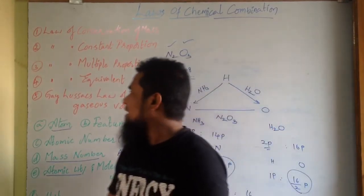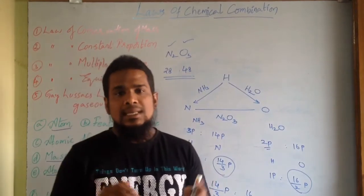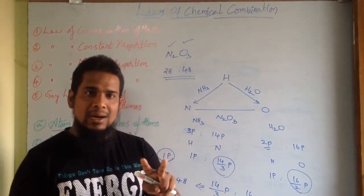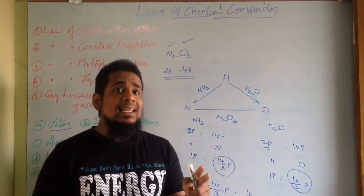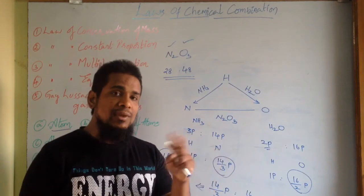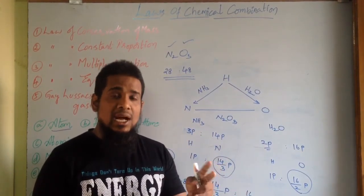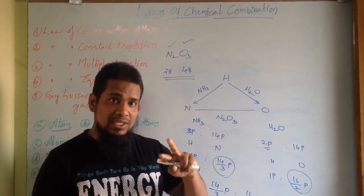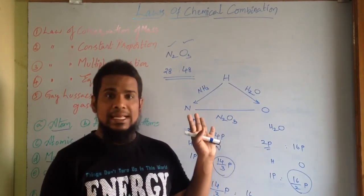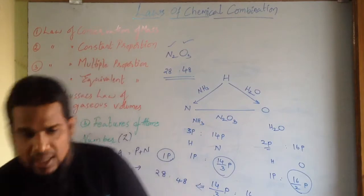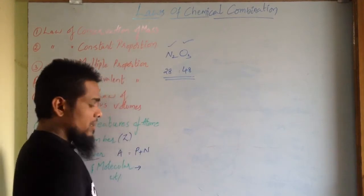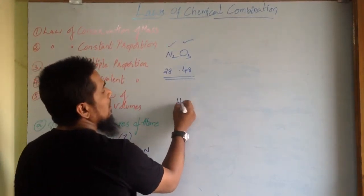Moving further towards Gay-Lussac's law of gaseous volumes: if two gases are combining to form a compound, the ratio of their volumes — both with each other and with the product — is always a simple whole number ratio. Let us take one example to see this law in more detail.